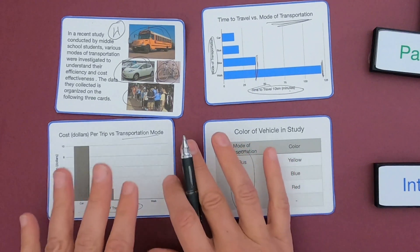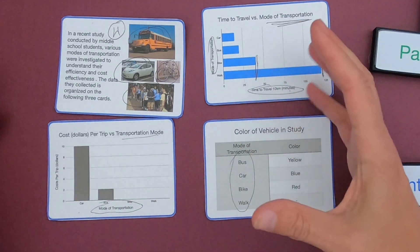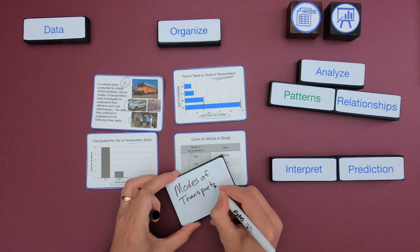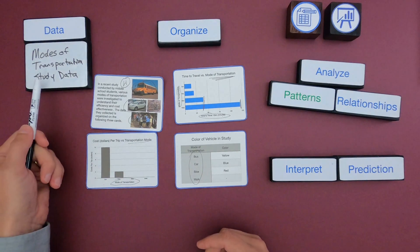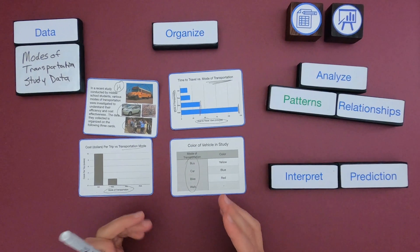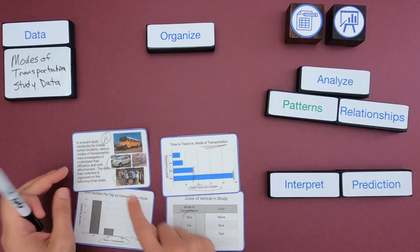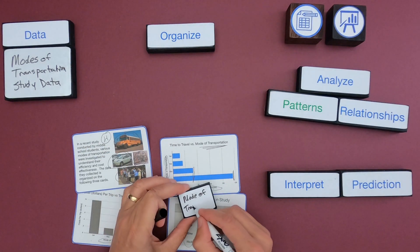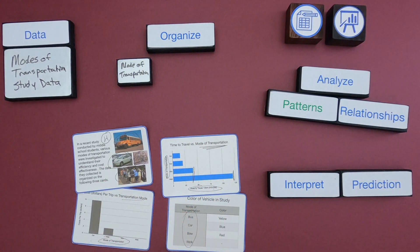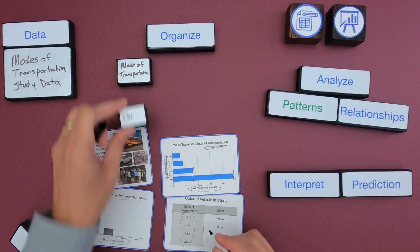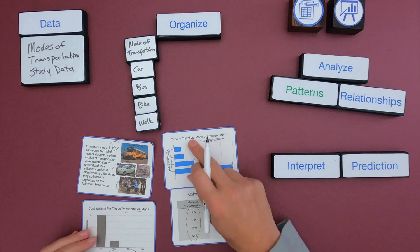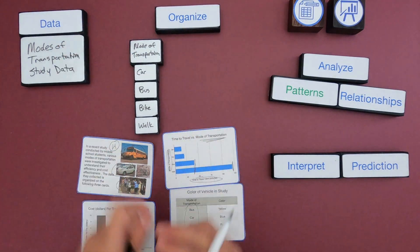As you look at data, you want to mark it up and highlight the important data, but the big thing is to organize it. I'm going to write what we're studying and show you the beginnings of a data table. The data they're studying is modes of transportation. The thing that's included on each of the data tables should always be your first column. So mode of transportation is our first column, and then I'll add time of travel, cost, and color as the other columns.